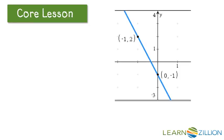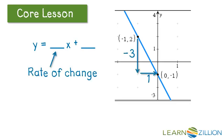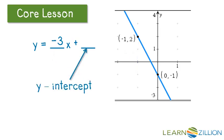And finally, looking at a graph, just remember that the rate of change is the coefficient of x. It's the change in y divided by the change in x. And the y-intercept is the constant. It's the value of y when x is zero.